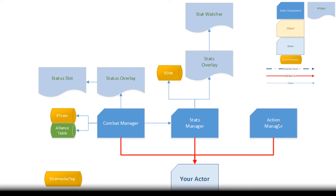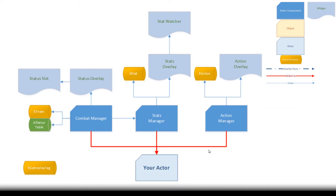You can add an action manager to your actor. It lets you set up rules for your actor when it takes actions. For instance, if you don't want your character to be able to shoot while sprinting, you can specify that using the action manager. It uses an enumerator of actions which you can extend, and a widget called action overlay to display what actions your actor currently has.